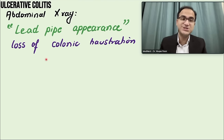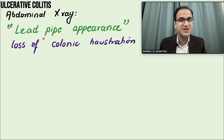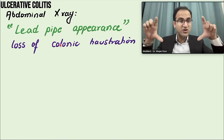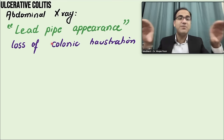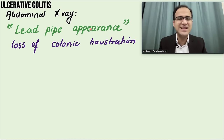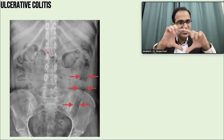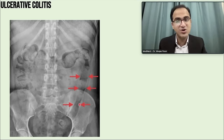Ileocolonoscopy is the main investigation, but abdominal X-ray can also be performed. In the severe form of ulcerative colitis, abdominal X-ray shows a lead pipe appearance — because the normal haustrations of the large intestine are lost, making the whole intestine look like a plain pipe. This occurs due to loss of colonic haustrations.